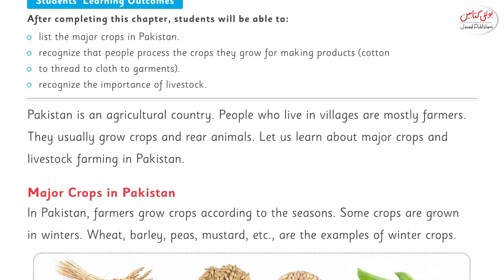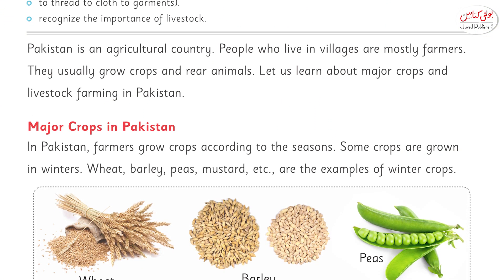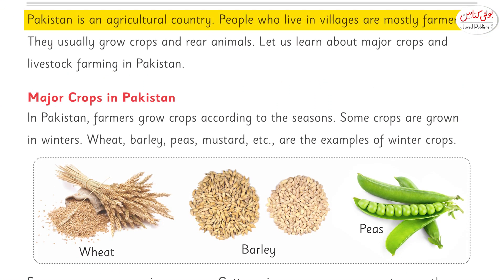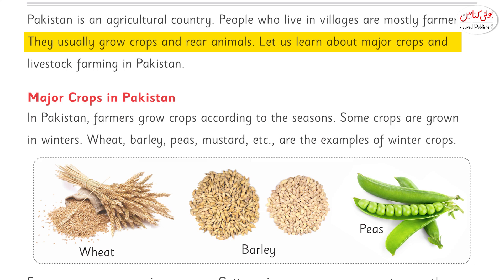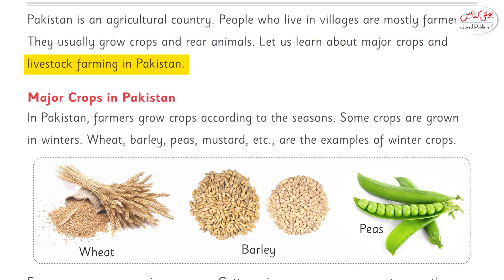Take out page number 45 of your textbook. Pakistan is an agricultural country. People who live in villages are mostly farmers. They usually grow crops and rear animals. Let us learn about major crops and livestock farming in Pakistan.